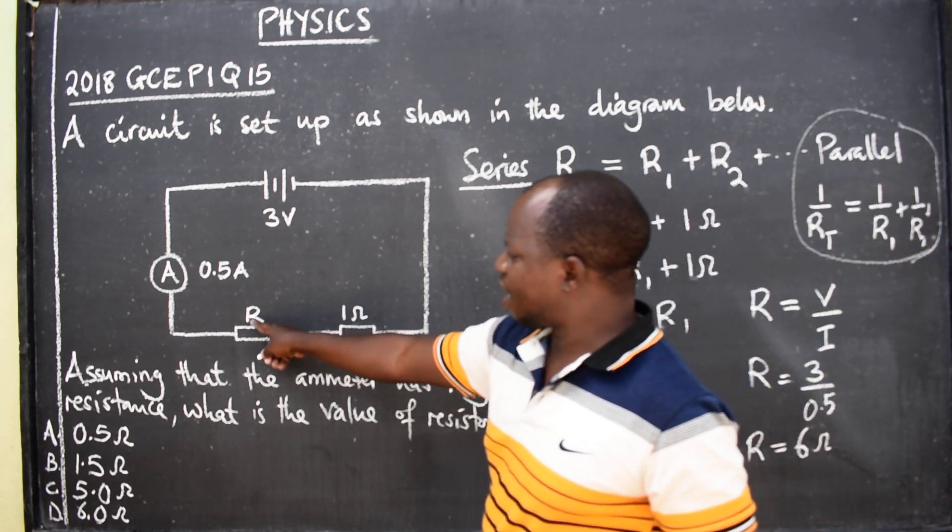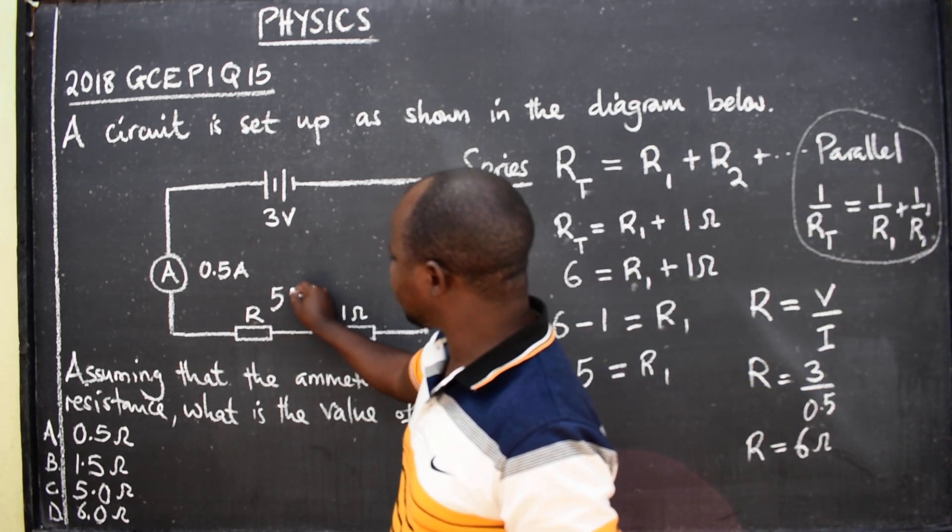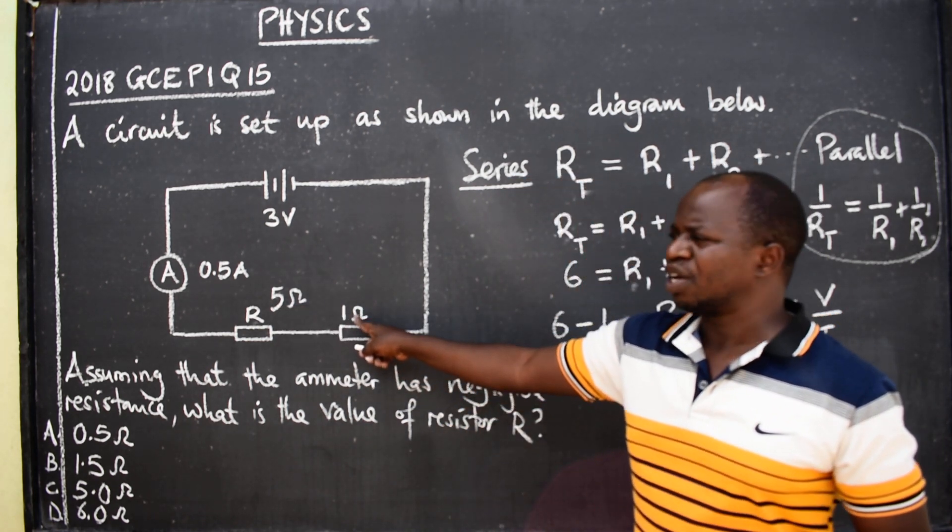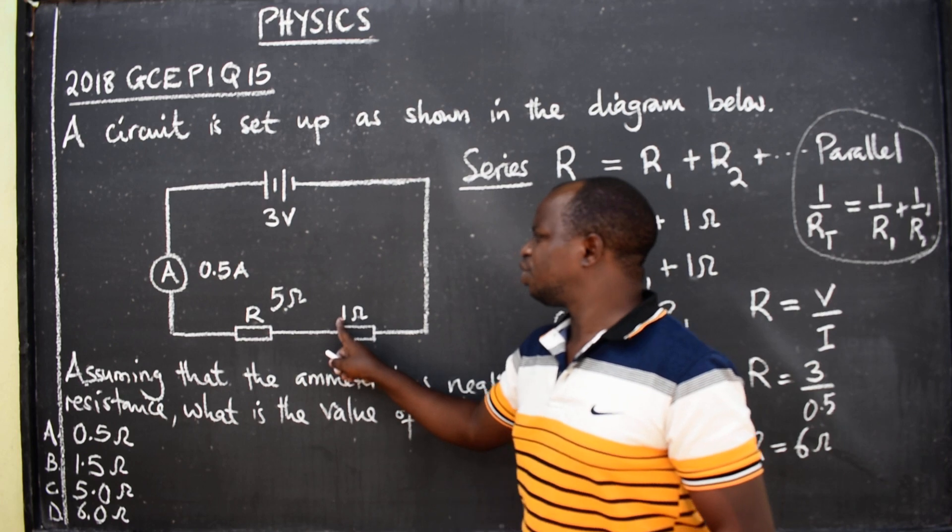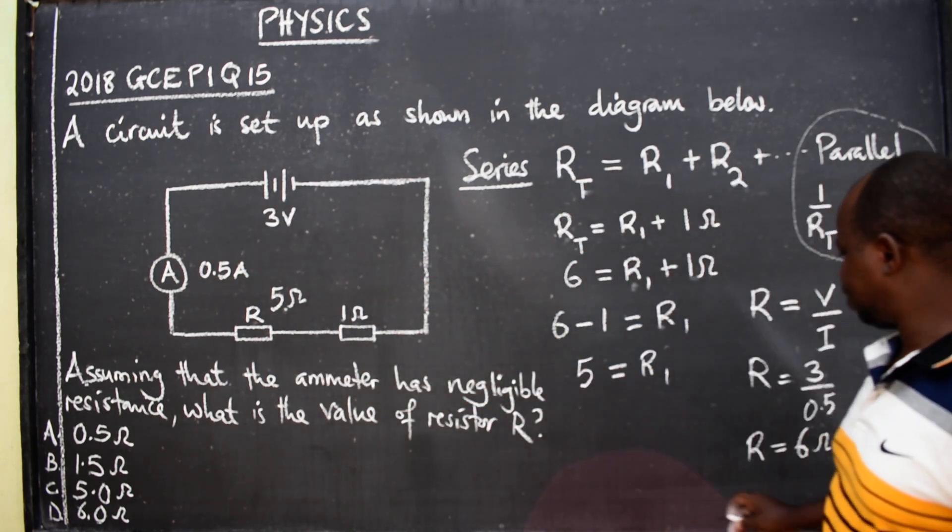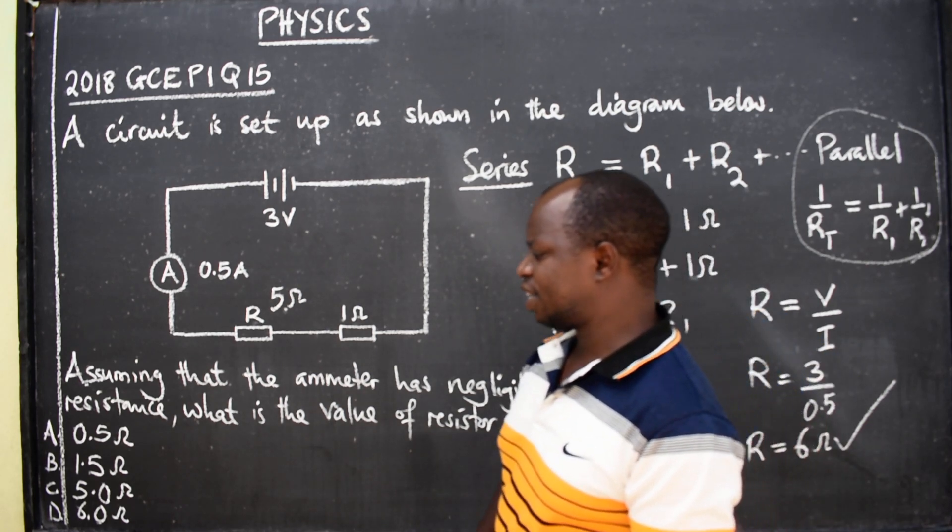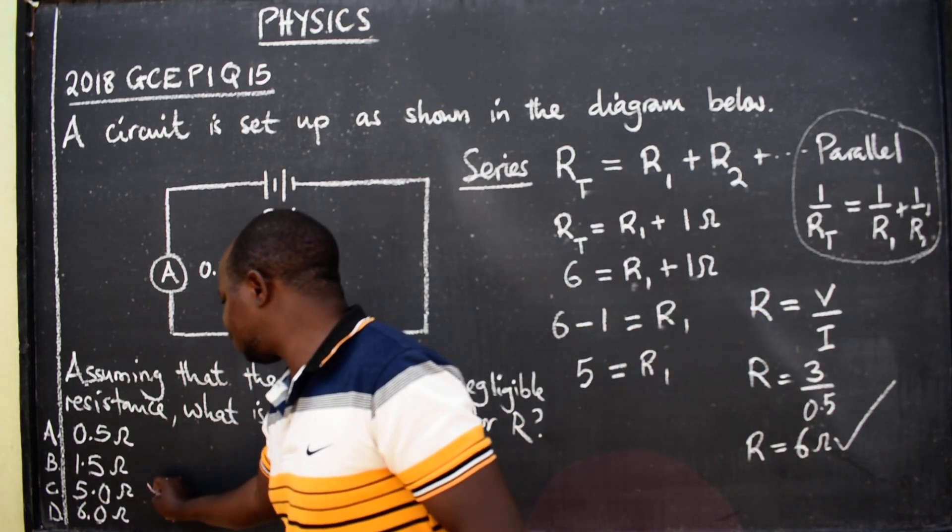So this R1 you are seeing here is 5 Ohms. In the sense that when you add the 2, 5 plus 1, you should get the total which is 6. Therefore, the correct answer here is 5.0, option C.